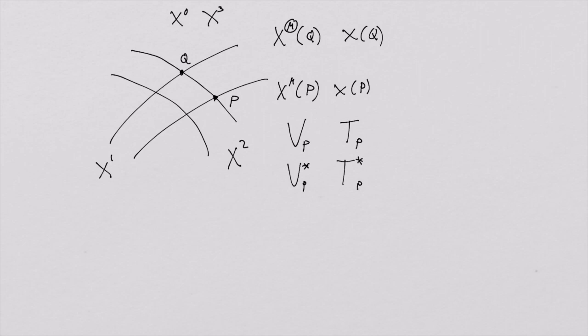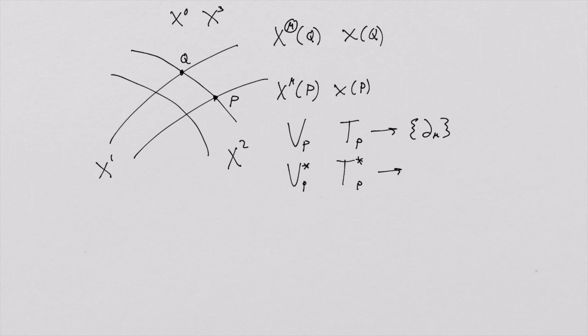Everything else is the same—the name is just different. But now when we talk about the tangent space, that automatically elicits the fact that the basis of that vector space, the tangent space, are the differential operators—the four basis differential operators. And the basis of the cotangent space are one-forms.